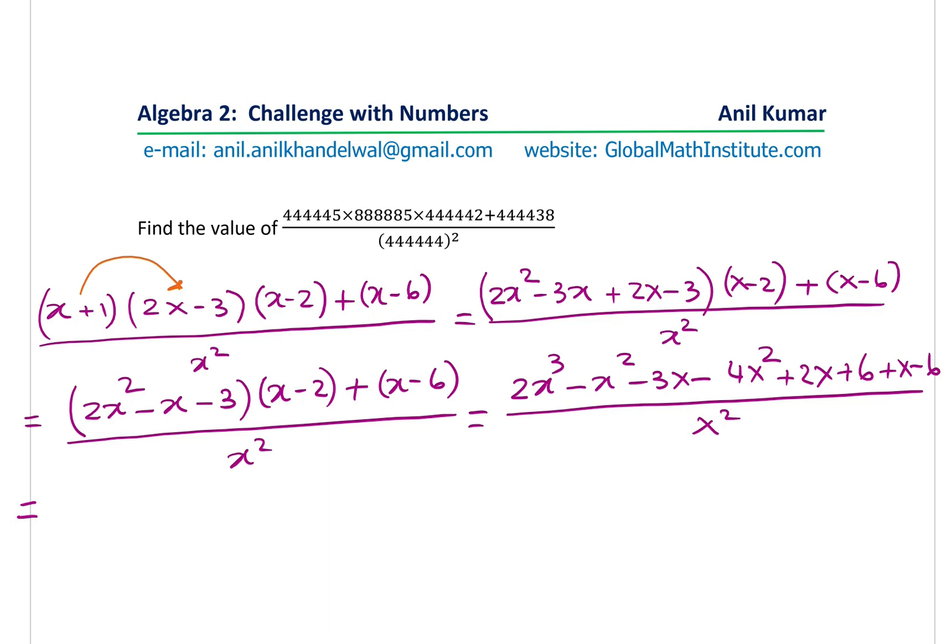So let's combine the terms. 2x cubed remains as such. The x squared terms, we have minus x squared and minus 4x squared. That gives us minus 5x squared. The x terms minus 3x plus 2x plus x cancel to 0, and 6 minus 6 is also 0. So we get 2x squared minus 5x squared divided by x squared. We can cancel x squared, so we get 2x minus 5.